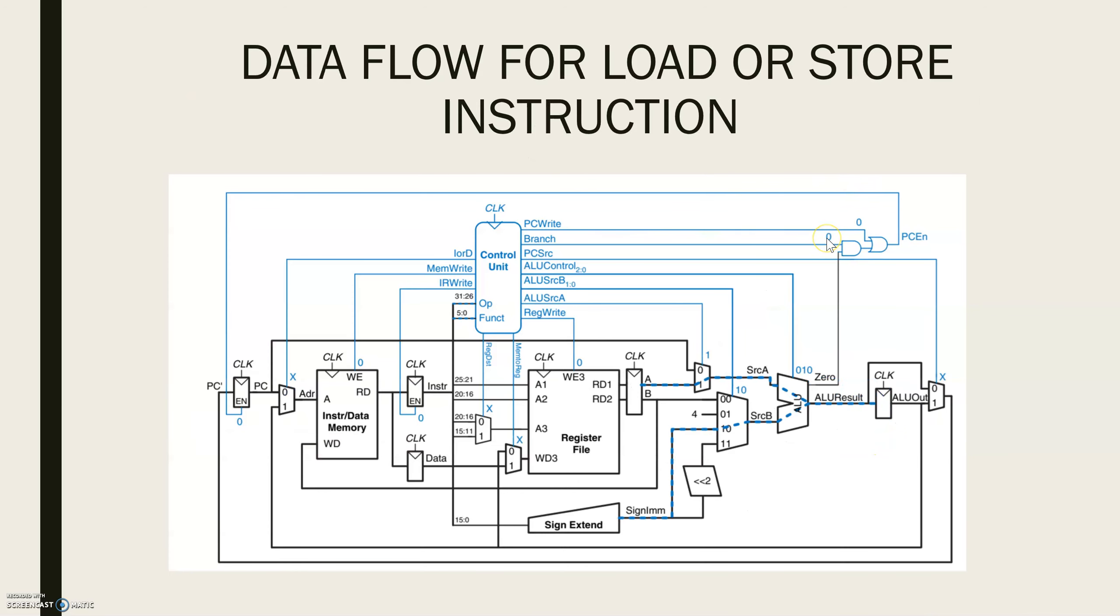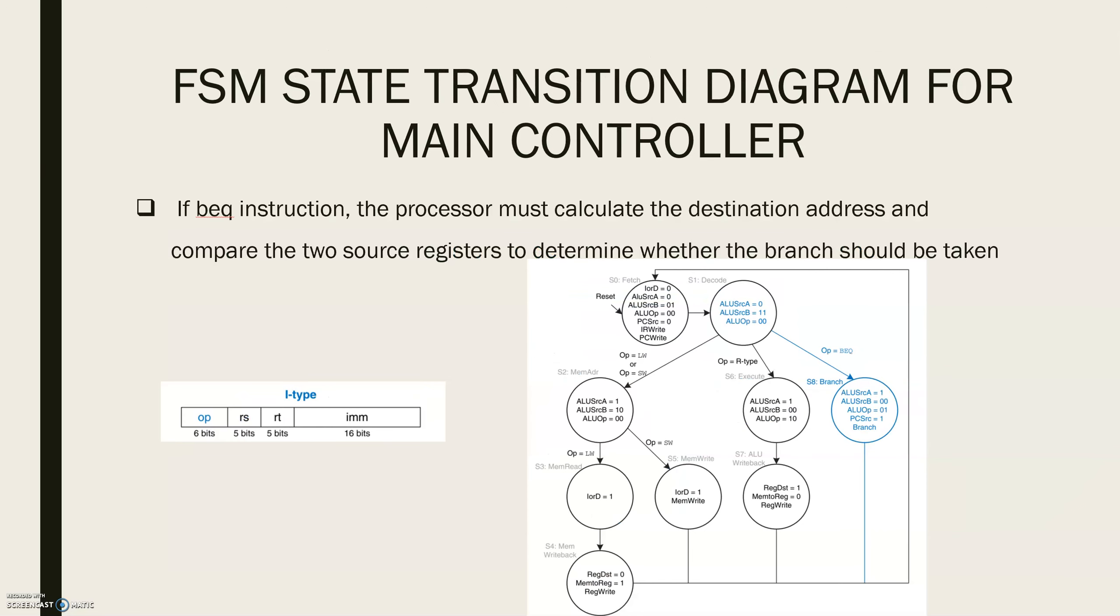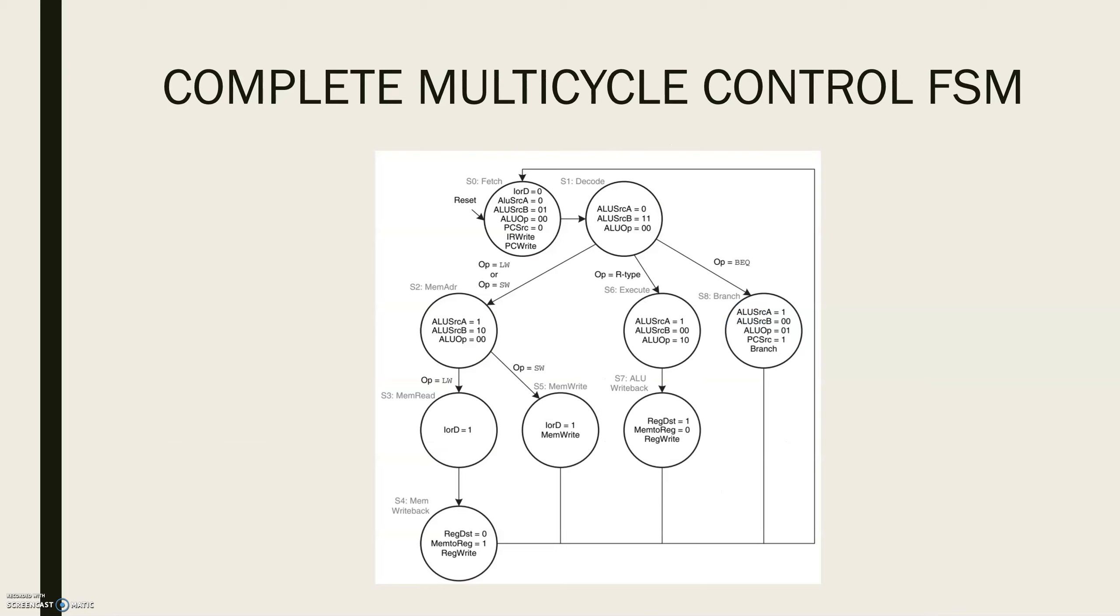This will be 1 to update the program counter with this address if the ALU result is 0. Putting these steps together shows the complete main controller transition diagram for multi-cycle processor.